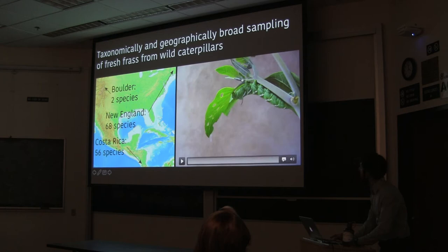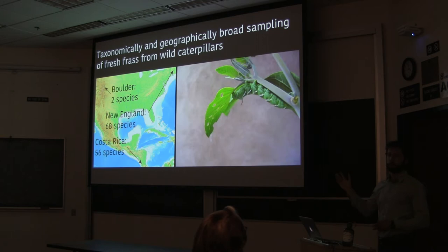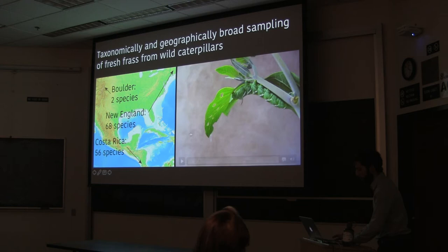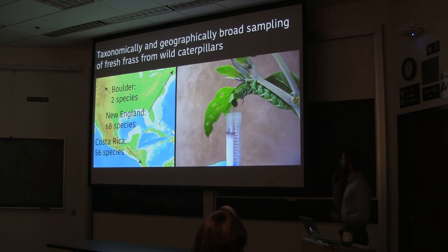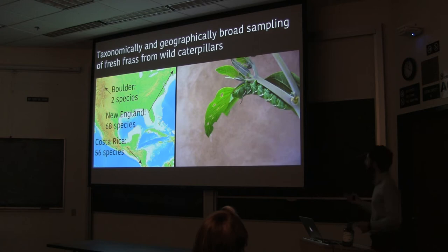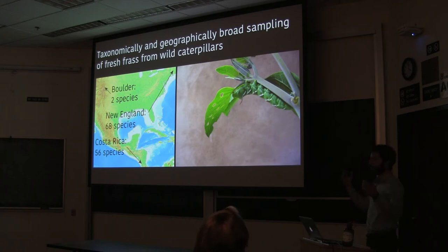In the end, we assembled a collection spanning Costa Rica, New England, and a couple from Boulder: 68 species of caterpillar from Sam Jaffe's lab, 56 species from Costa Rica with paired food plant samples, and a few from Boulder serving a special purpose. That's 124 species in total — only about 0.07% of lepidopteran diversity, but representing 15 families that cover most of the most diverse Lepidoptera. We had to sample fresh frass because it decomposes very quickly after defecation. We spent many hours literally watching and waiting for caterpillars to defecate.